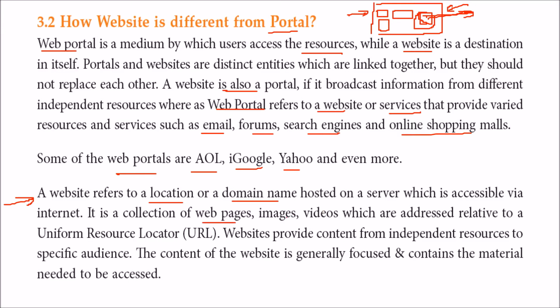A website is a collection of web pages, images, and videos. You put a URL — a Uniform Resource Locator — in your browser, and this URL finds that folder on the web server, and then you can access it. Website provides content from independent resources to a specific audience, and the content of a website is quite focused, portraying information of one specified area.